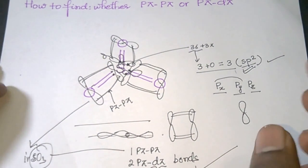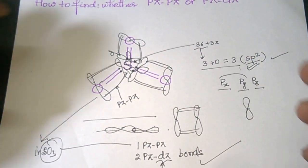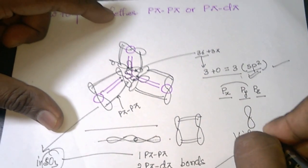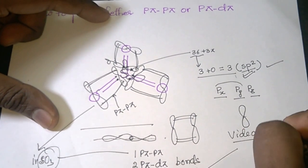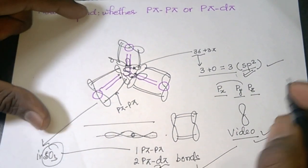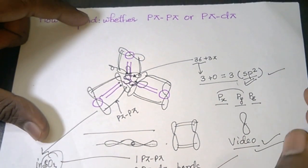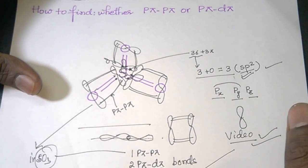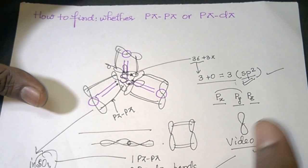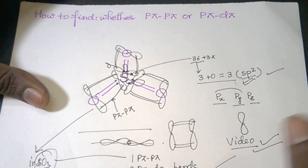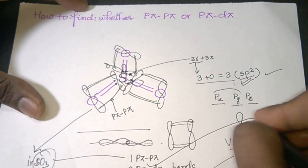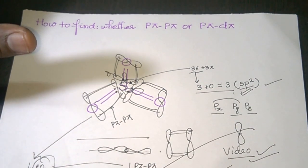This is the end of video lecture one. In the next video lecture, we will take many examples and determine the number of p pi-p pi bonds and p pi-d pi bonds in detail. Thank you very much.